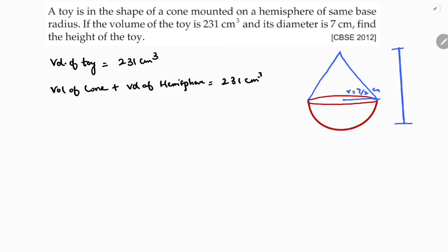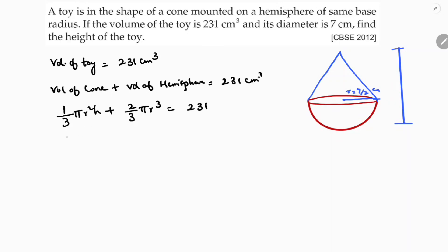We know volume of cone formula is 1 by 3 pi r squared h, plus volume of hemisphere is 2 by 3 pi r cubed, equals 231. From these two terms I'll factor out 1 by 3 pi r squared, leaving h plus 2r.